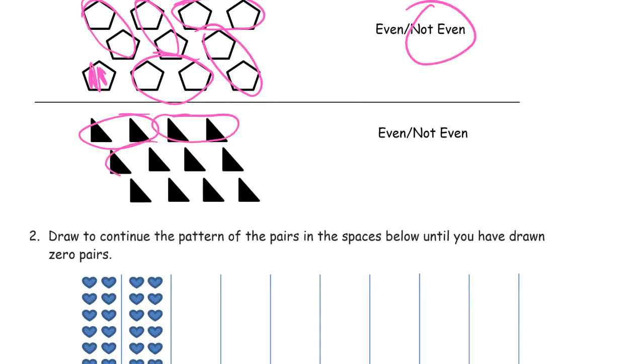Two, two, two, two. And you can circle them any way you want, as long as they just have two in each group. And they're all paired up, so they're even.